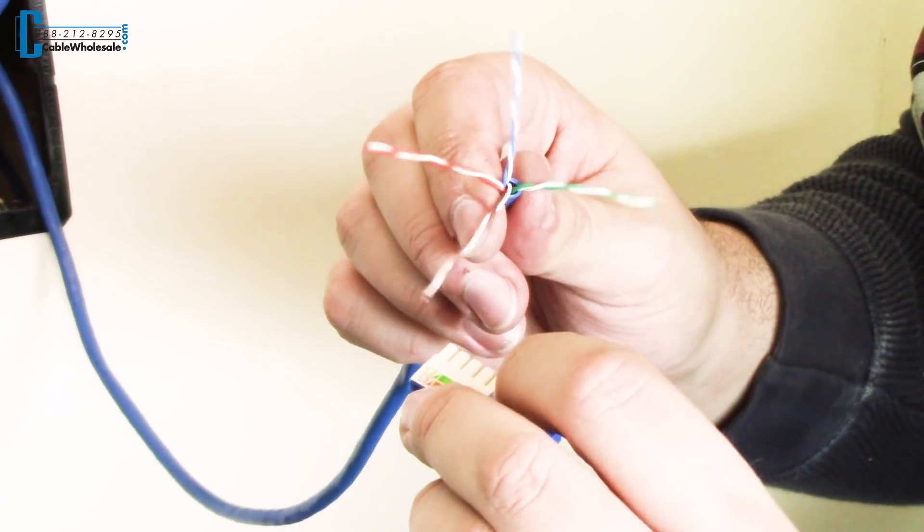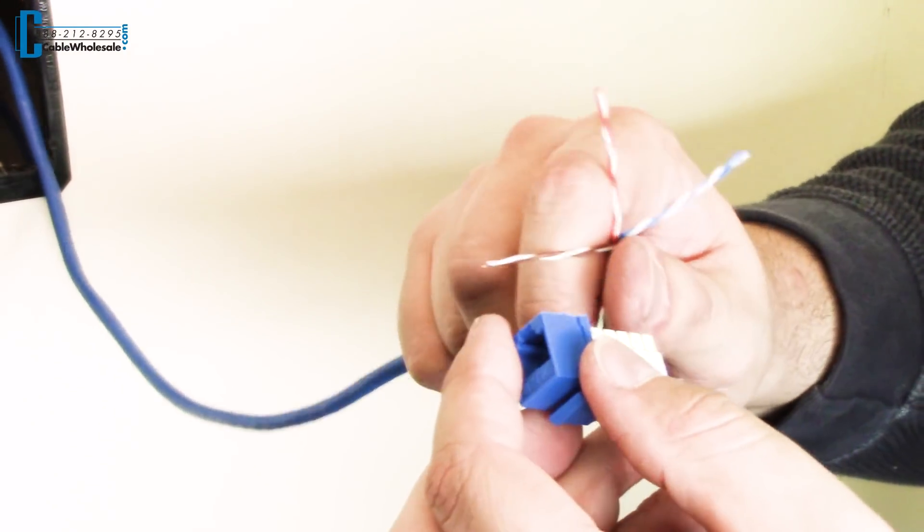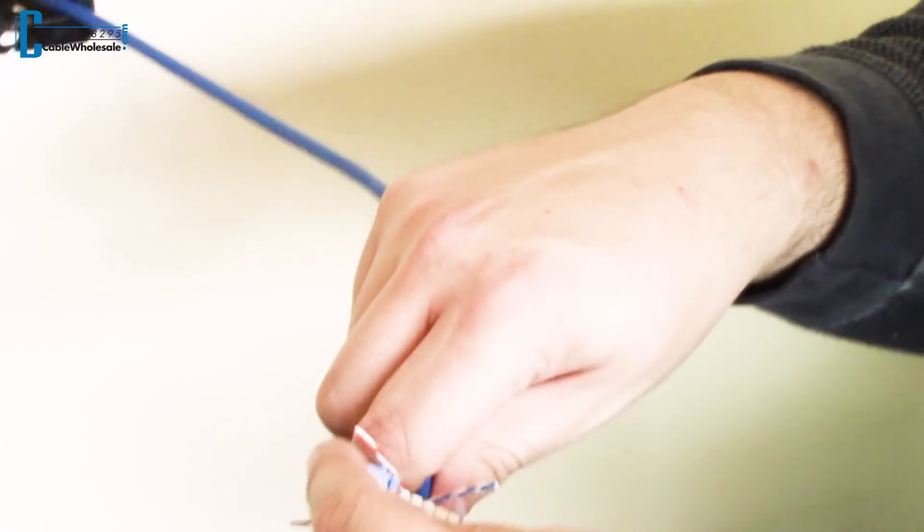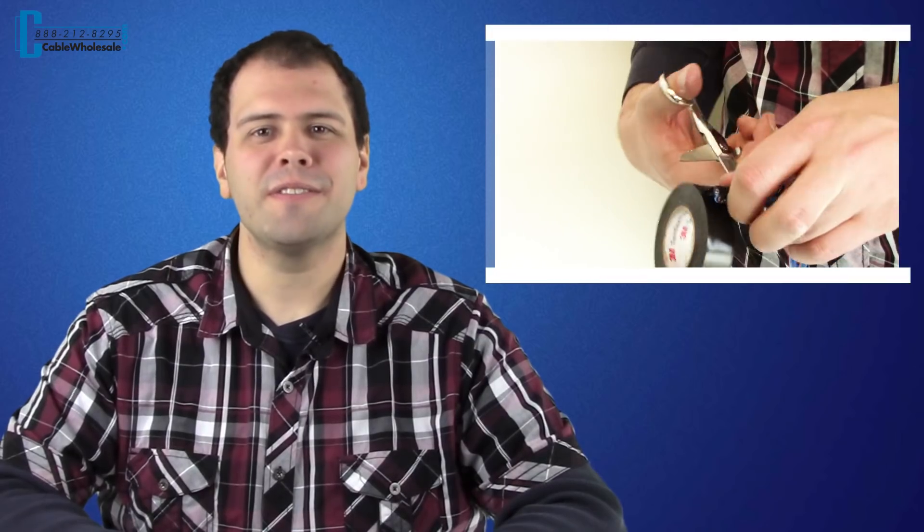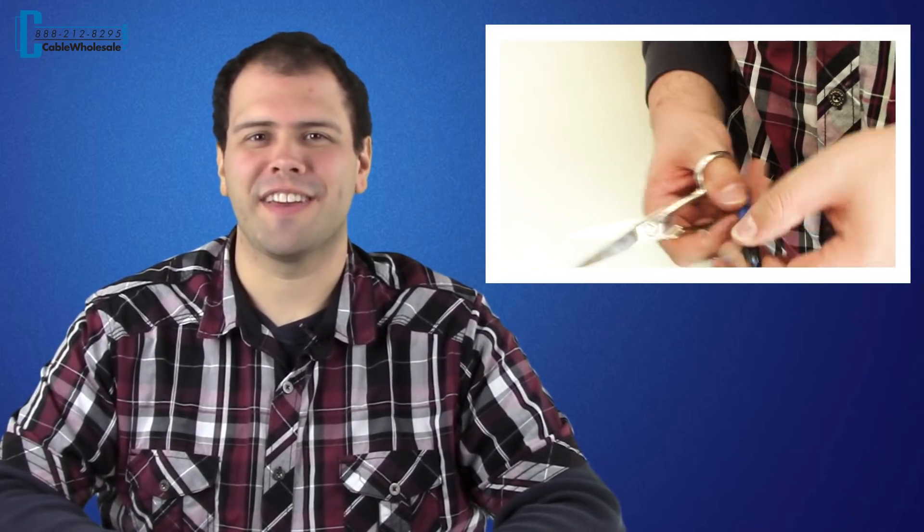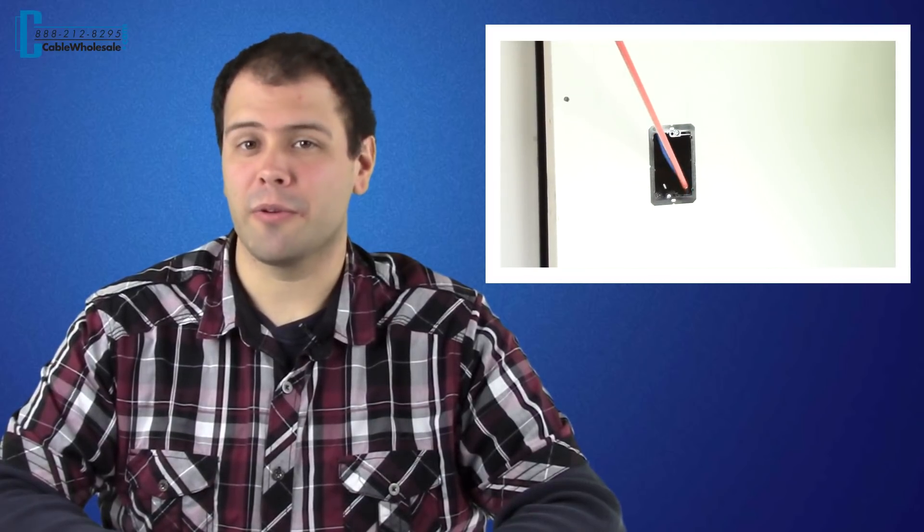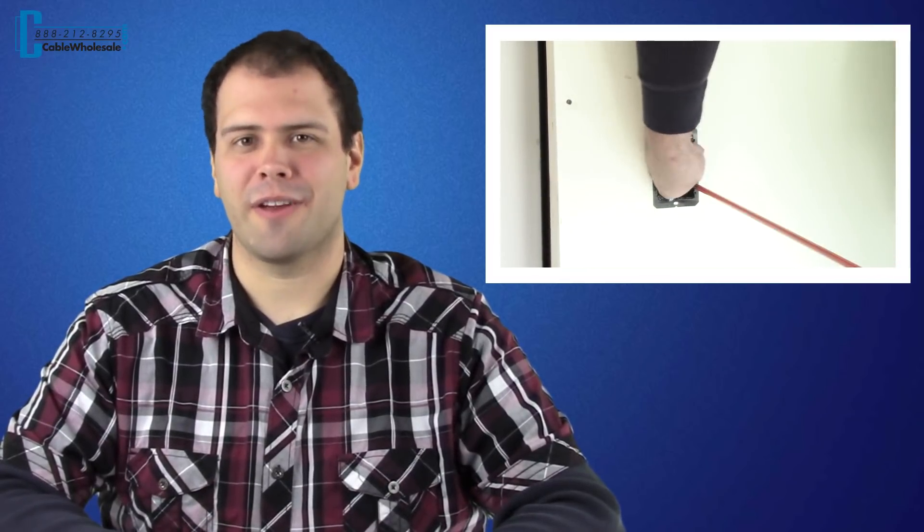You're in the field running a big or small network in a home or office and you need to punch down a bunch of keystones. First use some electrical tape to bundle the cables together. Use a pull rod to pull the cables through the hole so you don't have to fish out the cables.